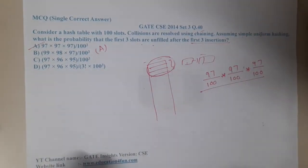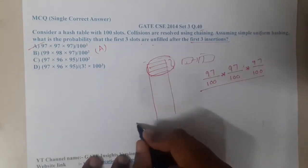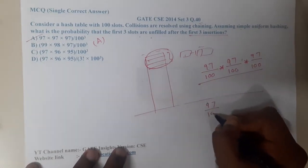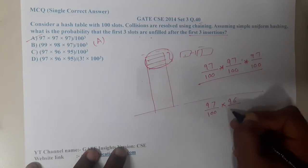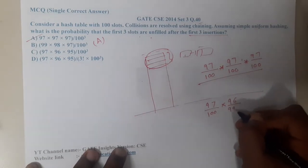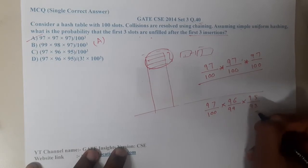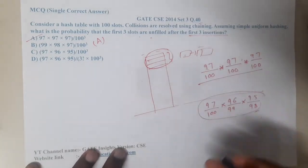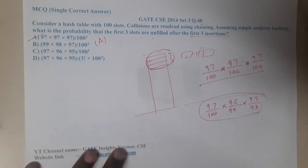The reason option A is correct is because we are using chaining. If you are not using chaining, it would become 97/100, then 96/99, then 95/98 — because you would be reducing one more slot each time.